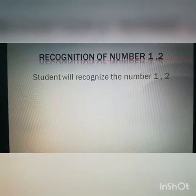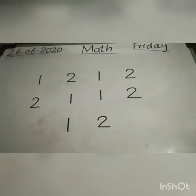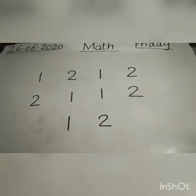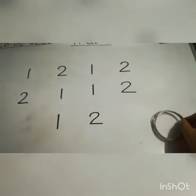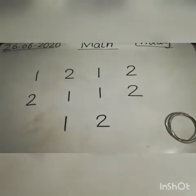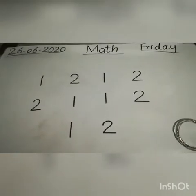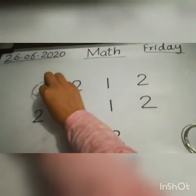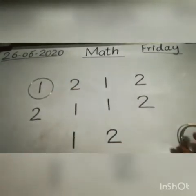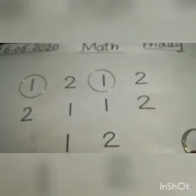In this activity you will look at the numbers and recognize the number which will be asked. Here you can see some numbers written on the board. You can also use number cards. We need some circles like bangles. Now you will encircle the said number. Circle one — good, circle another one.